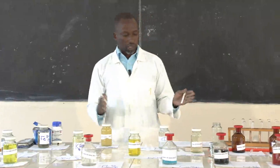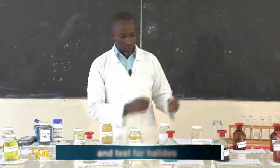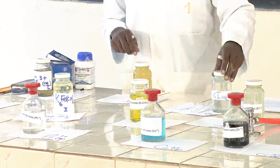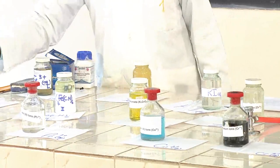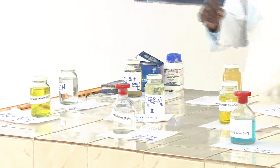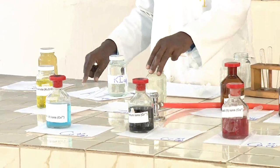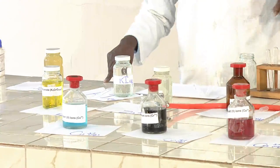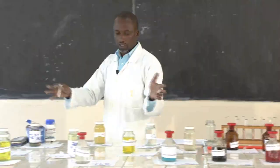Basically in this practical that we are going to look at, I wanted to take you through the number of ions we are going through — the cations we have here. We have iron 3 ions, iron 2 ions, a solution of potassium iodide, potassium hexacyanoferrate 2, potassium thiocyanate, potassium hexacyanoferrate 3, lead 2 ions, potassium chromate, zinc 2 ions, copper 2 ions, chromium ions, cobalt 2 ions, sodium hydroxide, and ammonia solution.